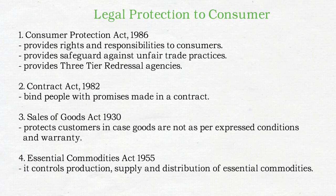Number two: Contract Act 1872 — iska purpose hai ki contract mein jo bhi promises kiye hain, dono parties unhe fulfill karein. Number three: Sales of Goods Act 1930 — consumer ko goods waise hi provide kiye jayein jaise conditions aur warranty ke accordingly promise kiya tha; agar nahi kiya toh is act ke under complaint kar sakte hain. Number four: Essential Commodities Act 1955 — jitni bhi essential commodities hain jaise sugar, unka production, supply aur distribution is act ke accordingly control kiya jaata hai.